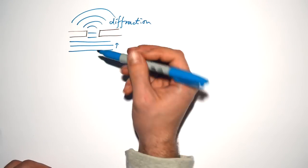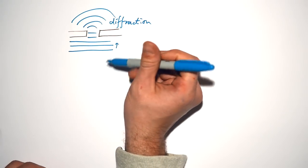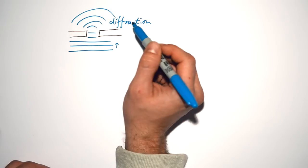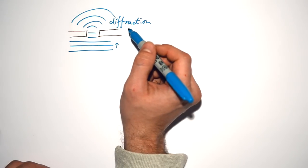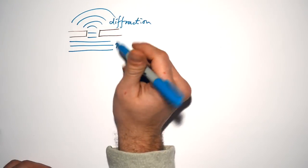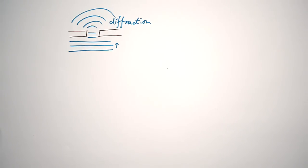When waves go through a gap or around an object, they diffract — they will fill in the empty space where the waves aren't; they will spread out. We see this with sea waves, but we also see this with light and EM waves, and it's actually one of the main pieces of evidence for the wave nature of light.